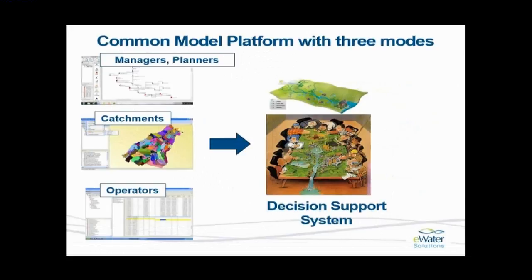The bottom view is an operations type view. The operations view is based on a planning model, but it has the additional option of a two-dimensional spreadsheet which represents both time and spatial distribution of the system. This is designed for real-time operation of river systems.